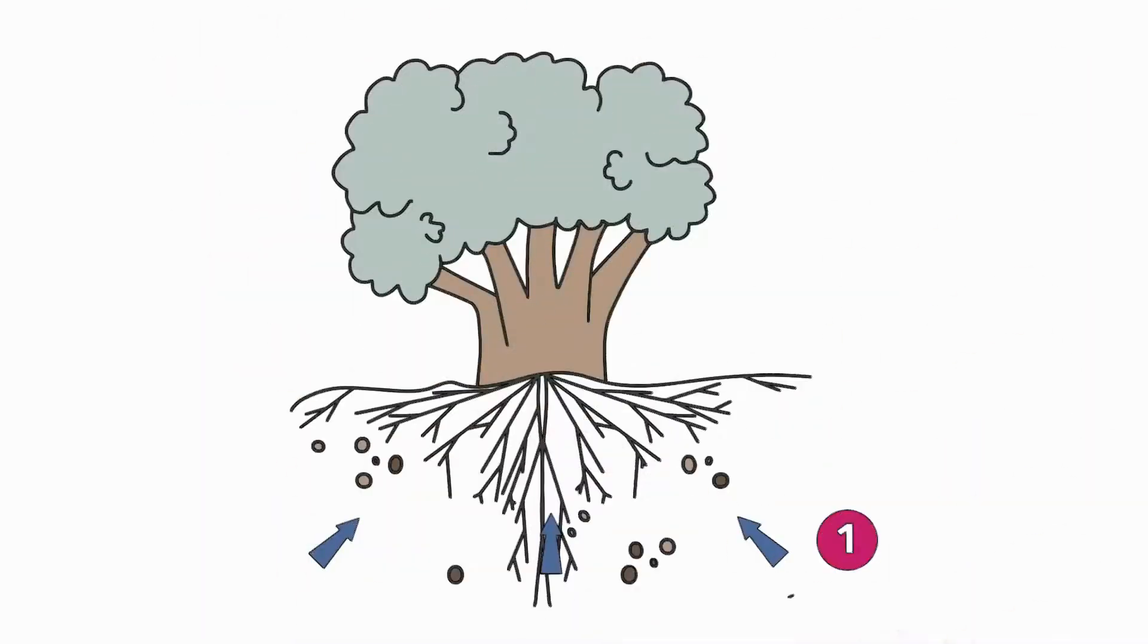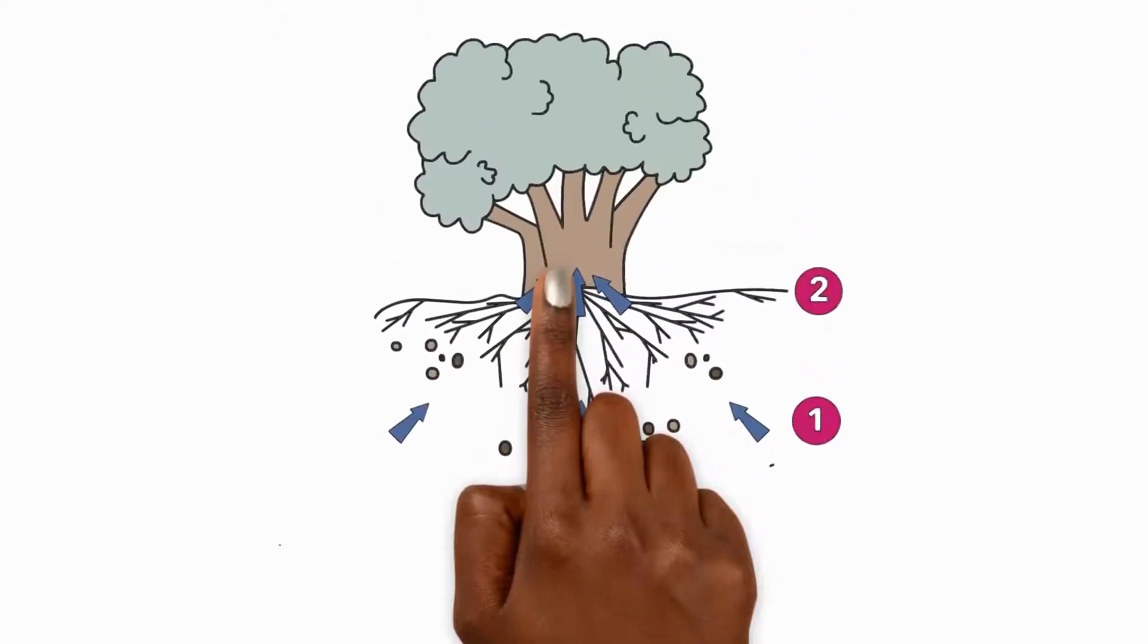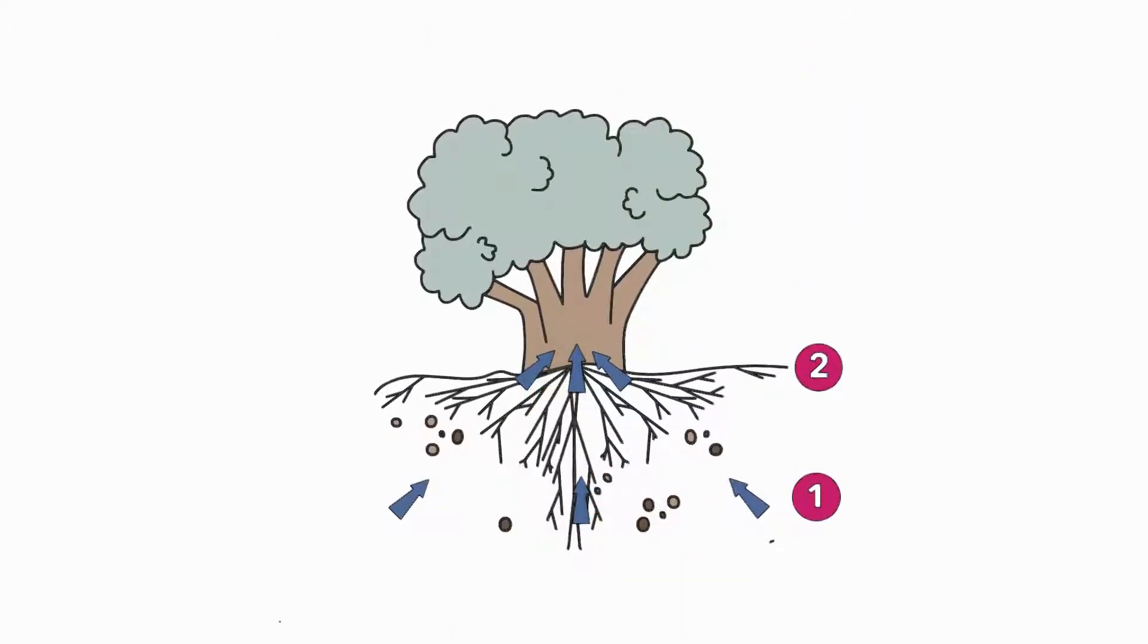It all begins with the roots. They absorb water from the soil. This water then travels up through the stem of the plant.